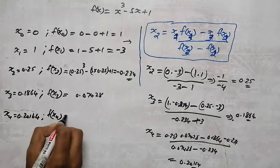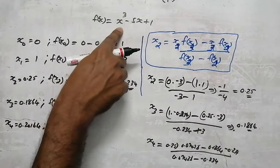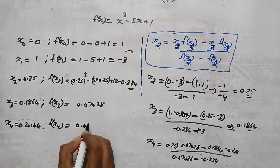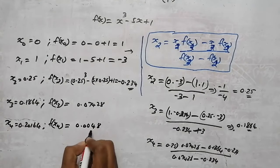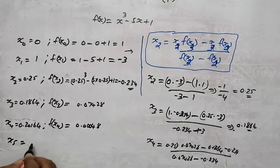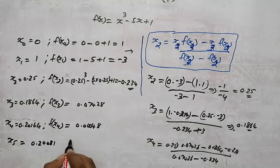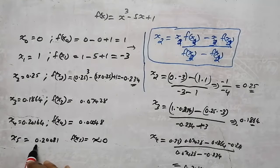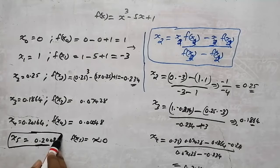Now find f(x₄) by substituting x equal to 0.20164. We get a value of 0.0048, which is close to 0. Then find x₅, and we get x₅ equal to 0.20081. Finding f(x₅) gives a value nearly equal to 0. Thus the root is approximately x equal to 0.20081, obtained using the secant method.